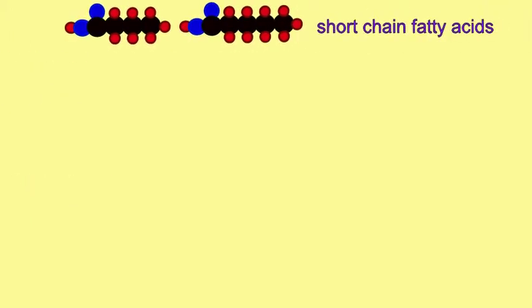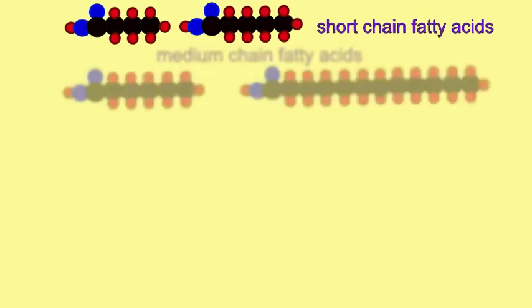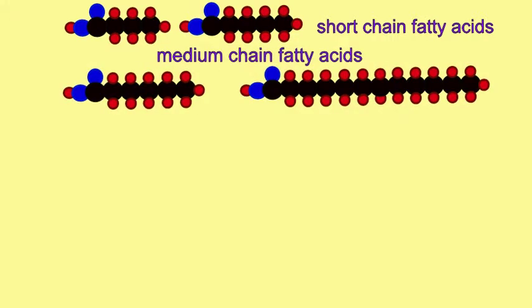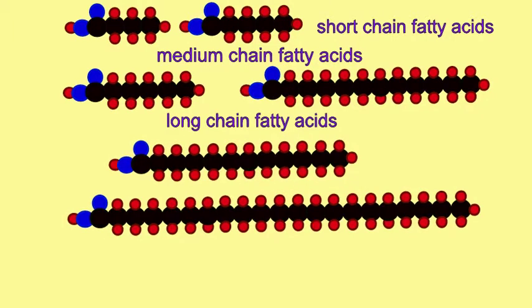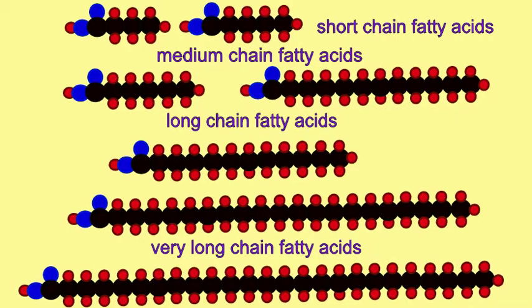Short-chain fatty acids possess fewer than 6 carbons. Medium-chain fatty acids possess between 6 and 12 carbons. Long-chain fatty acids possess 13 to 21 carbons, and very long-chain fatty acids contain more than 22 carbons.